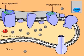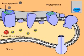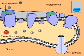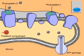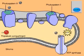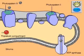The buildup of hydrogen ions inside the thylakoid compartment stores potential energy. This energy is harvested by an enzyme called ATP synthase. As hydrogen ions diffuse through ATP synthase down their concentration gradient, the enzyme uses the energy of the moving ions to make ATP.